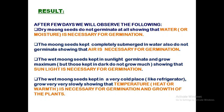The wet mung seeds kept in sunlight germinated and grew very well because all necessary abiotic factors — light, water — were present. However, the seeds kept in the dark, where sunlight did not reach, did not show any germination. From this, we can conclude that sunlight is also very much essential for germination.